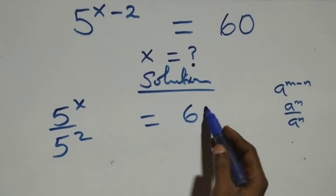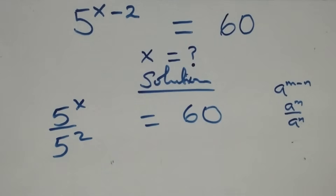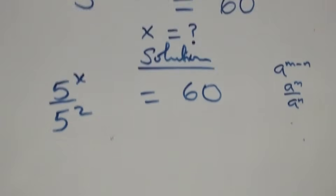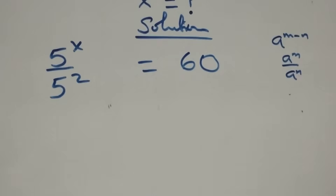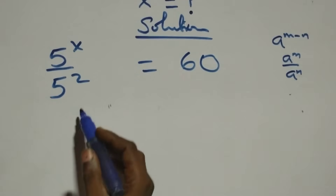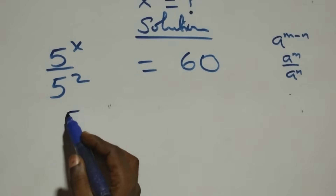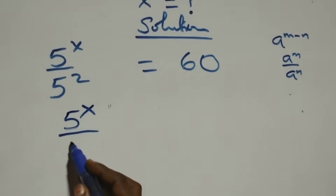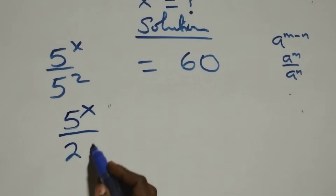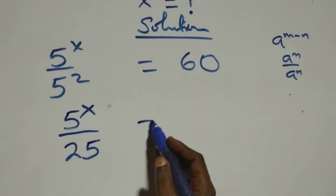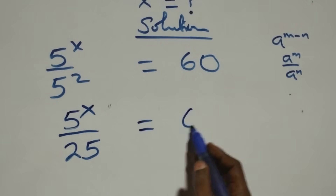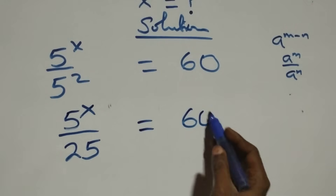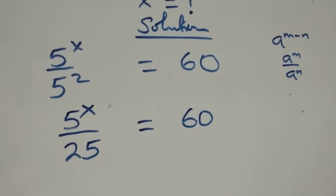Which can be written as 5 raised to power x over 5 squared — and 5 times 5 is twenty-five — then equals to 60 on this side.